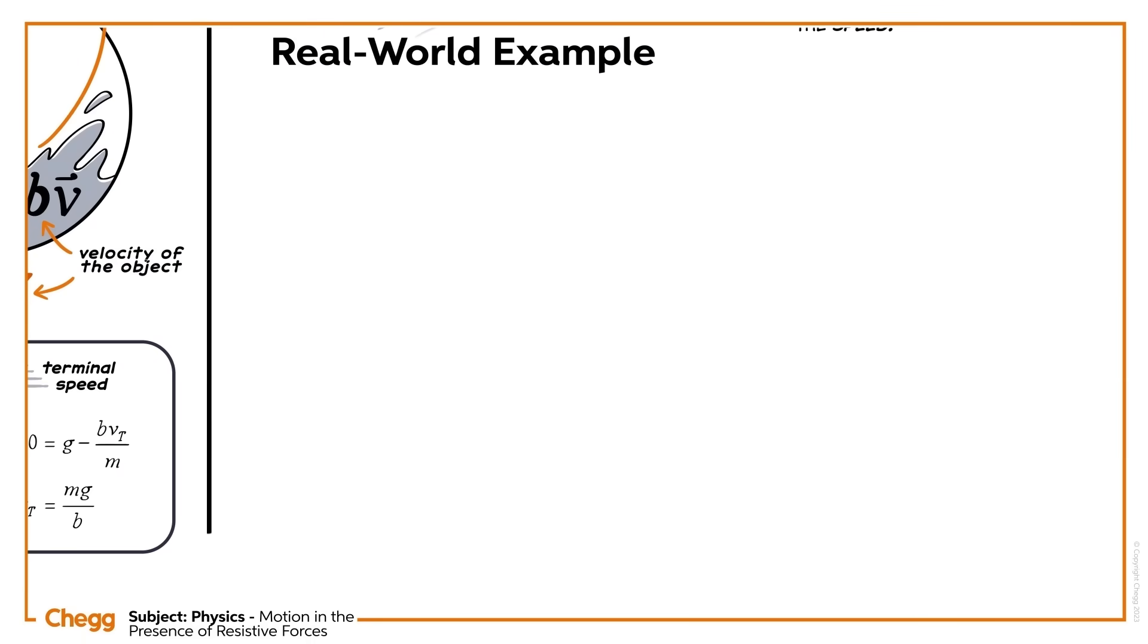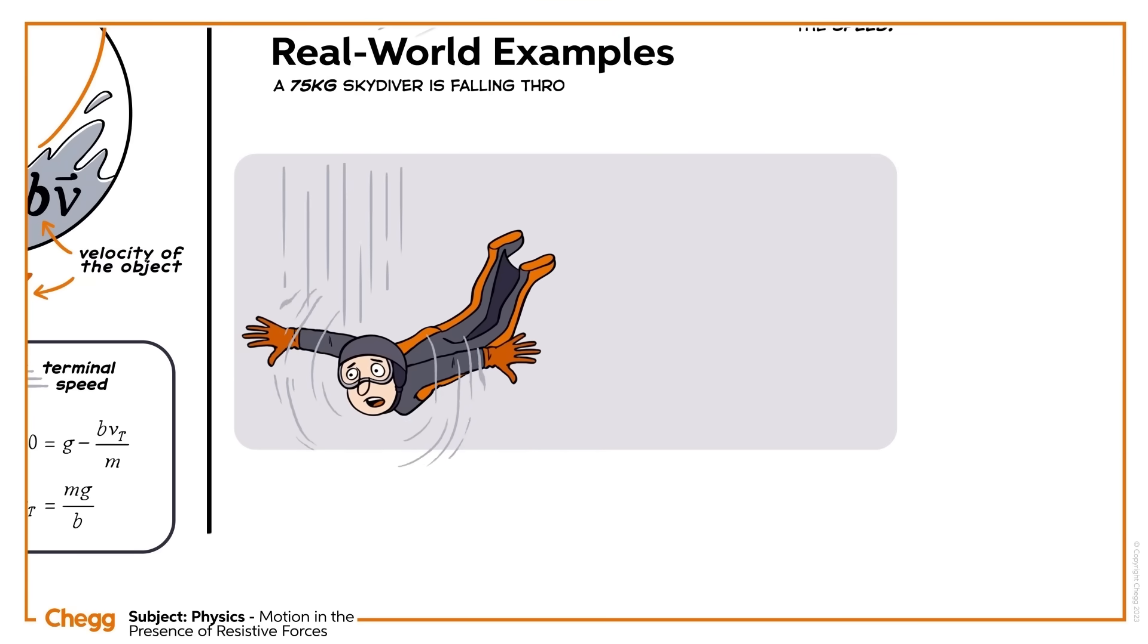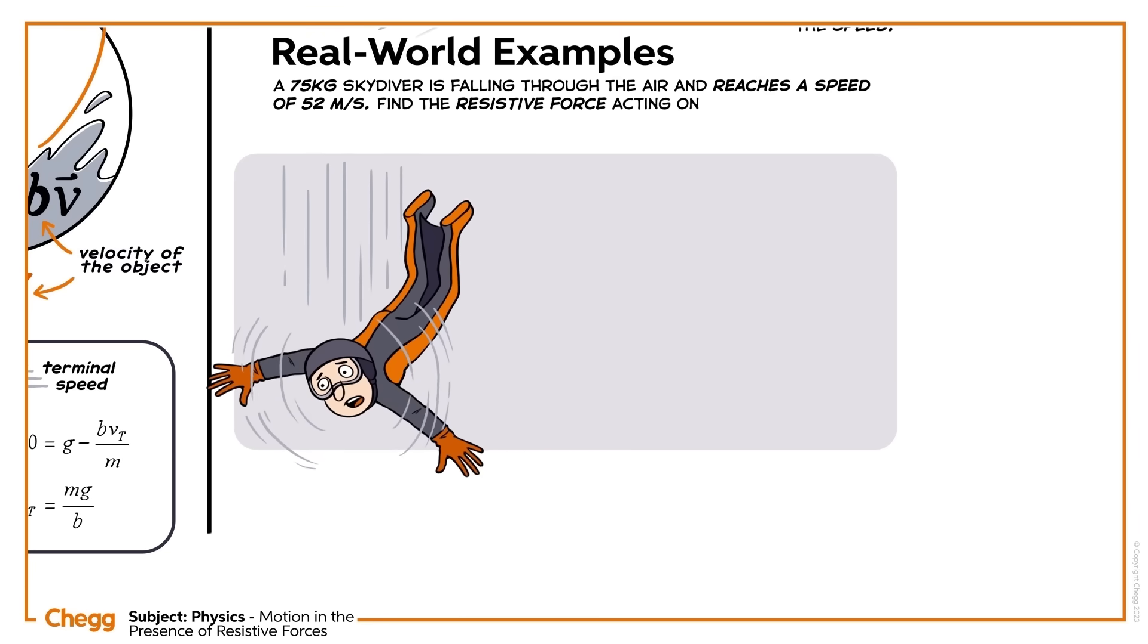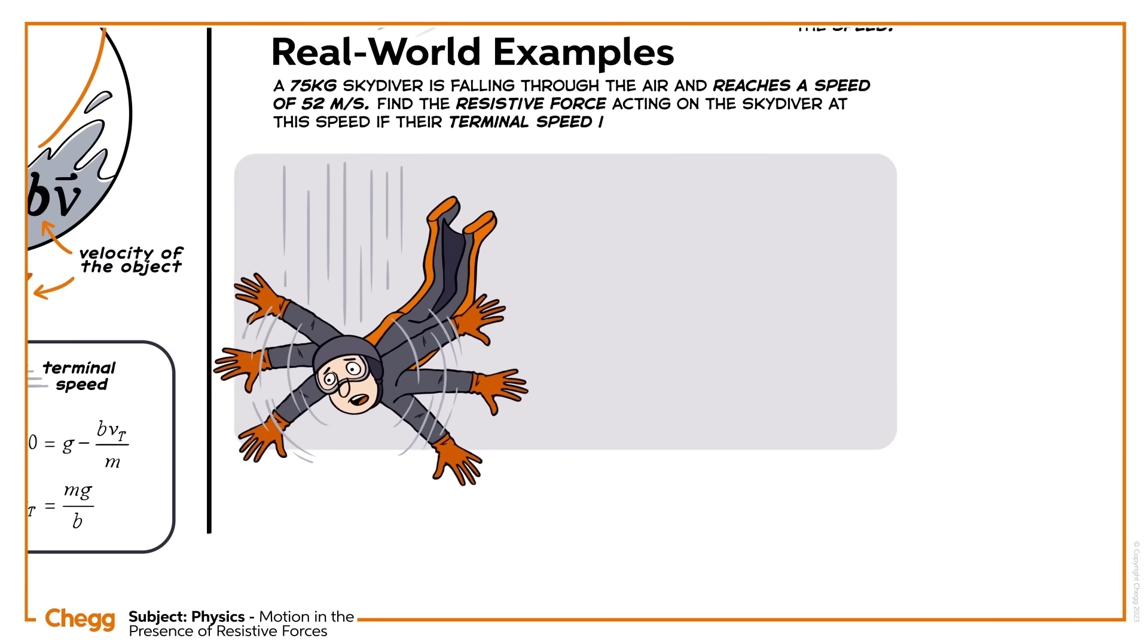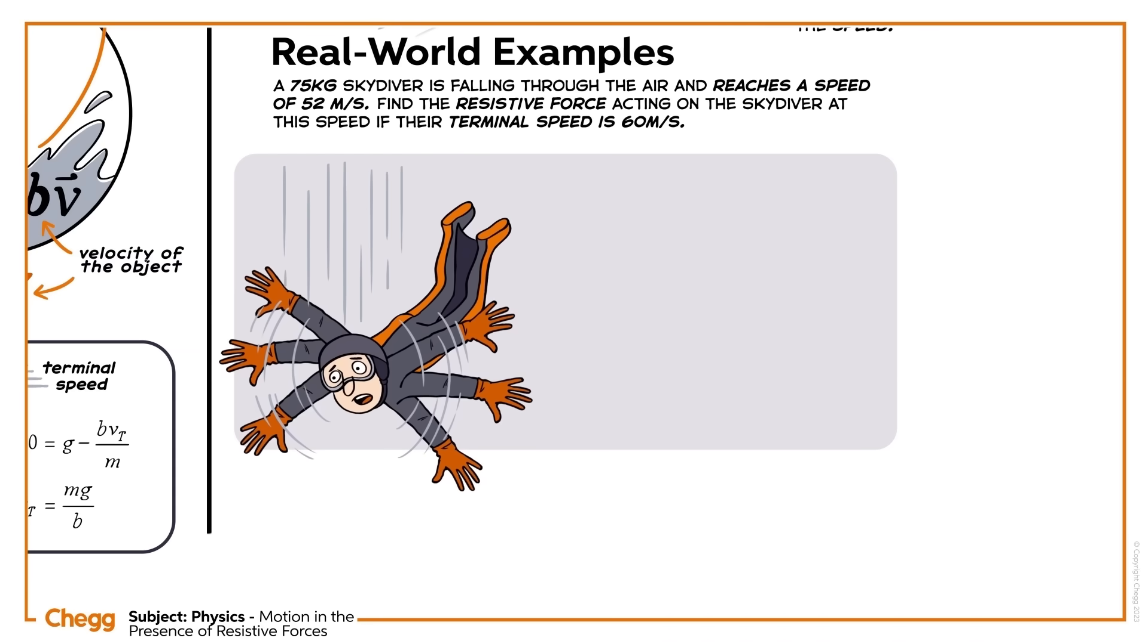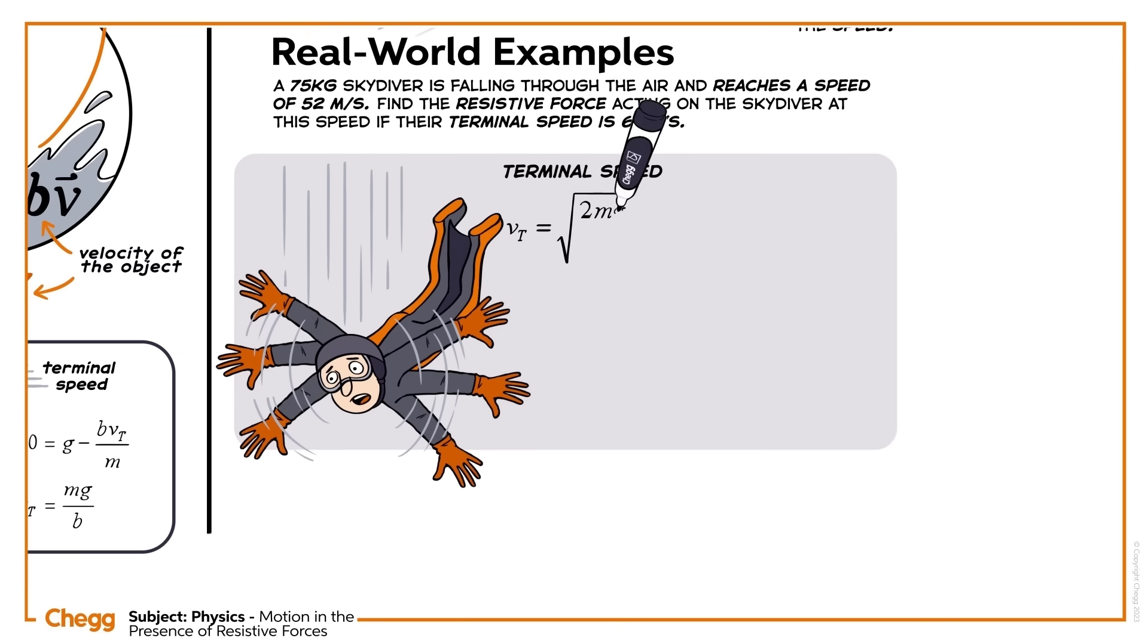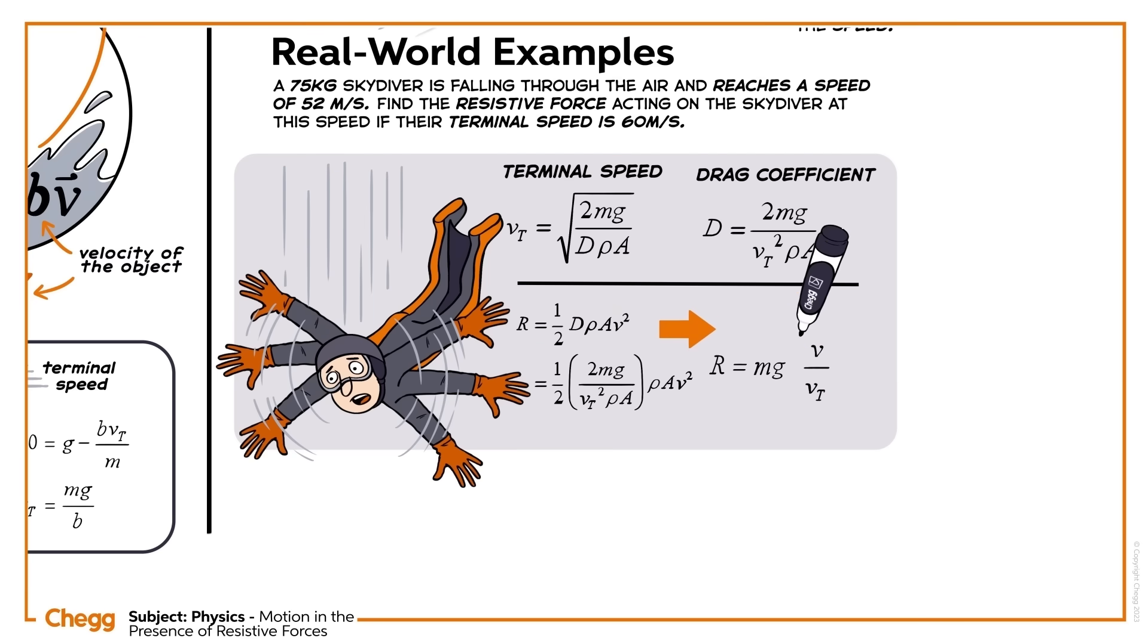Let's now work through an example. A 75 kilogram skydiver is falling through the air and reaches a speed of 52 meters per second. Find the resistive force acting on the skydiver at this speed if their terminal speed is 60 meters per second. As this is a large mass falling through air at high speed, the terminal speed is the square root of 2mg over d rho A. The drag coefficient D from the terminal velocity expression... When we're considering large objects falling at high speeds through air, the resistive force R varies as half the drag coefficient D times the density of air times the cross-sectional area of the object times the speed of the object squared.